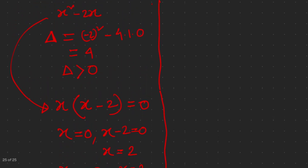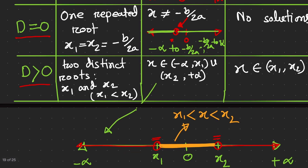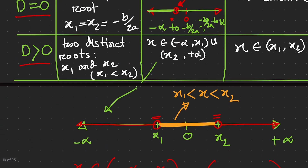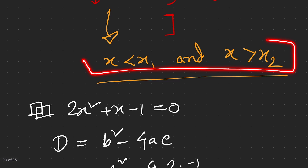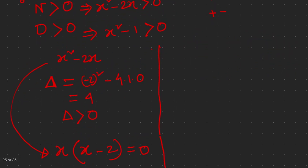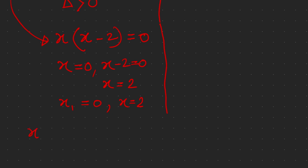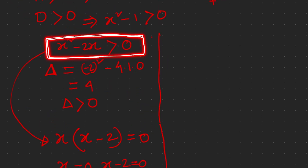From the table we know: if the discriminant (delta) is greater than zero and the quadratic equation is set greater than zero, the solution for x squared minus 2x greater than zero is x less than 0 or x greater than 2. We've now found the solution for the numerator.